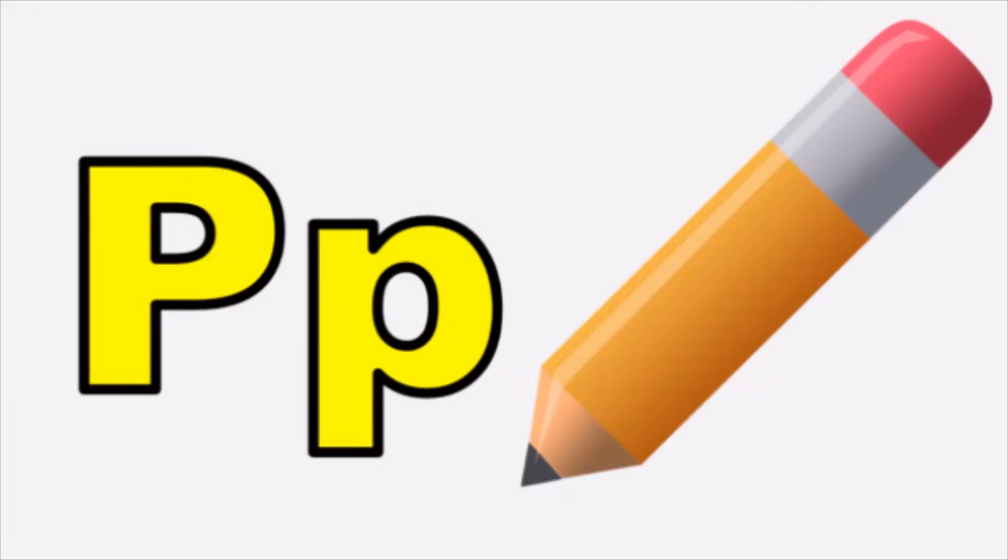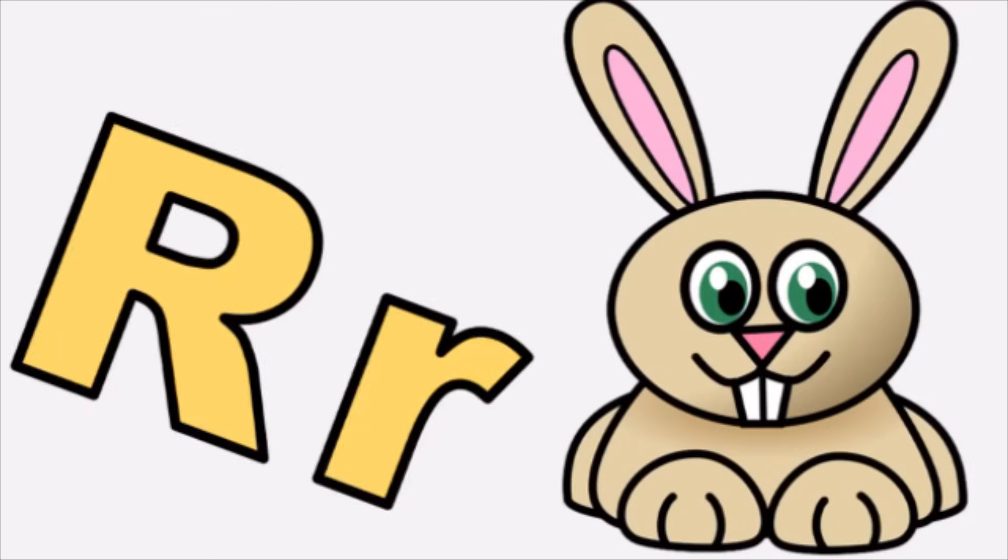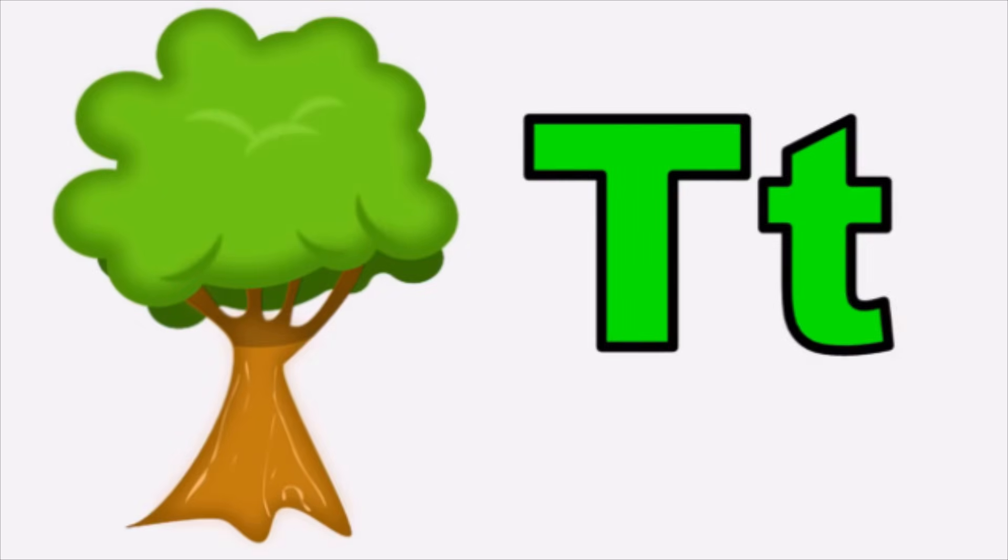P for Pencil, p, pencil. Q for Queen, k, queen. R for Rabbit, r, rabbit. S for Socks, s, socks. T for Tree, t, tree.